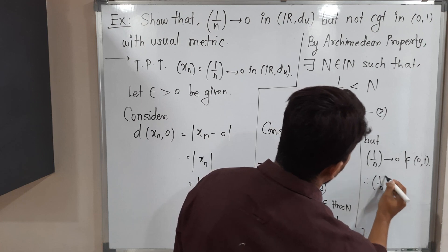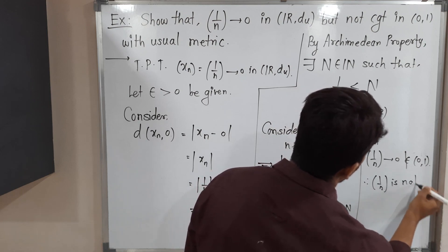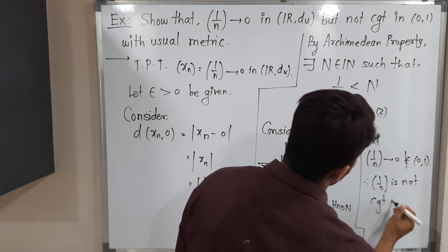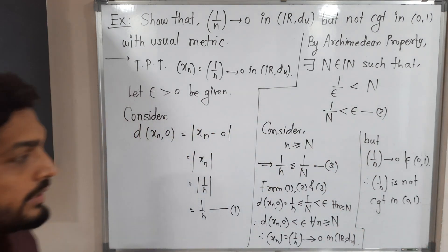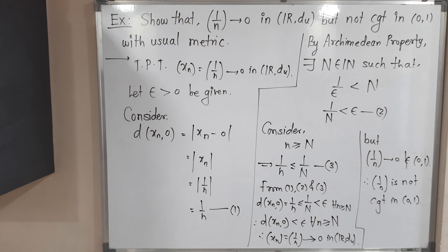Therefore, 1 by n is not convergent in open interval (0,1). So in this way we solve this example. Make a screenshot of it. Thank you. See you.